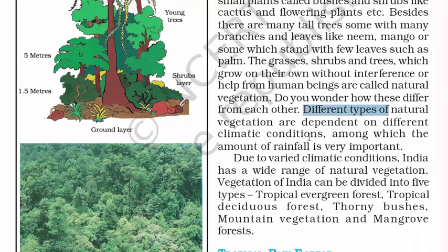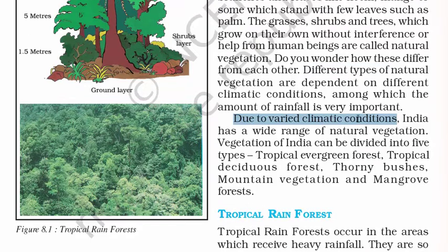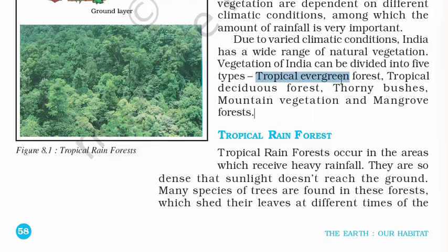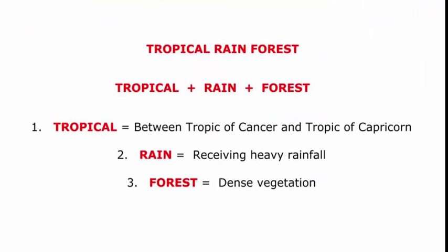Different types of natural vegetation are dependent on different climatic conditions. Where there is more rainfall the vegetation is thick and dense, and where there is less rainfall it will be sparse. Due to varied climatic conditions, India has a wide range of natural vegetation. Vegetation of India can be divided into five types: tropical evergreen forest, tropical deciduous forest, thorny bushes, mountain vegetation and mangrove forests. These are very important — make a note of this.